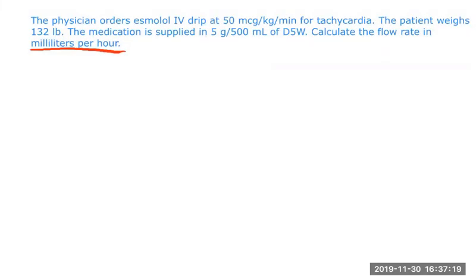We're going to look at this problem. The first thing we need to know is that our answer is going to be expressed in milliliters per hour. Our current order is expressed in micrograms per kilogram per minute. We have the patient's weight at 132 pounds, and a concentration of five grams in 500 milliliters. These are the pieces we need to answer this question.